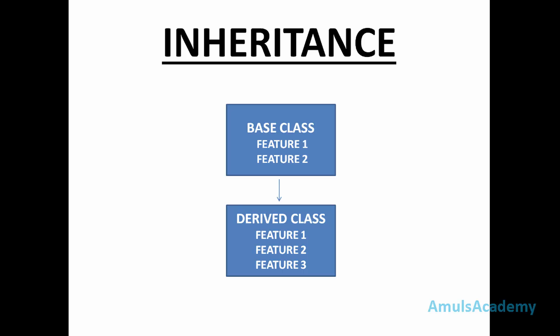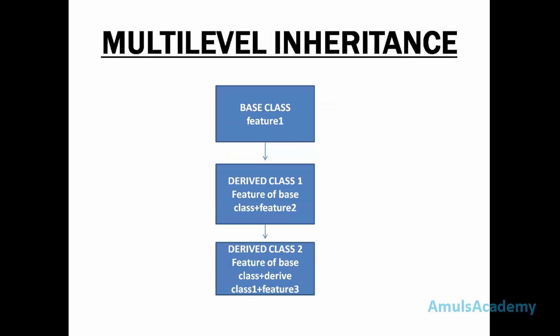Today in this tutorial we are discussing about multilevel inheritance and multiple inheritance. In multilevel inheritance, there will be a base class and we can derive a class from this base class — that is derived class 1 — and from derived class 1 we can derive another class, that is derived class 2. Here we can see many levels, so it is called multilevel inheritance.